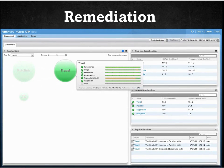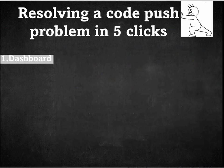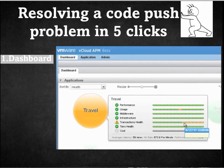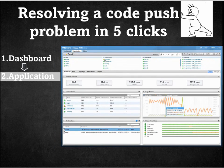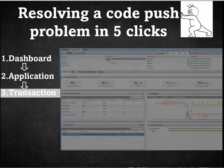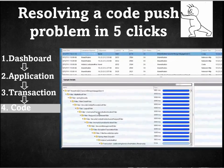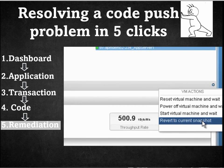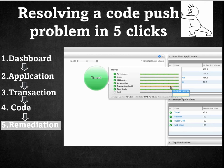AppInsight has an integration into vCenter Orchestrator that allows us to integrate with vCenter to revert to the previous snapshot. Once the snapshot is updated, we see that the application status goes back to normal. To summarize, we have resolved this issue in just five clicks. Using application mapping, we were able to identify the topology. This allowed us to drill down at the transaction level and analyze where in the code the problem existed. We were then able to remediate the problem. In short, AppInsight provided an easy way to map your application, identify performance issues, and remediate.